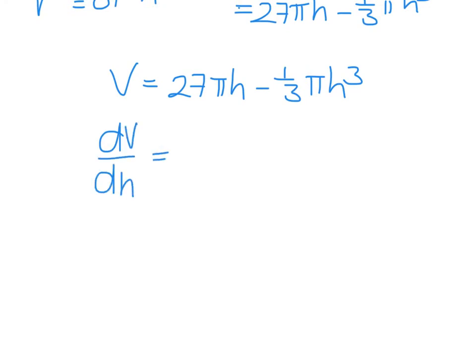Now if I differentiate with respect to h, we get 27 pi, then we have minus 1 third pi times 3 h squared. So that is 27 pi minus pi h squared.